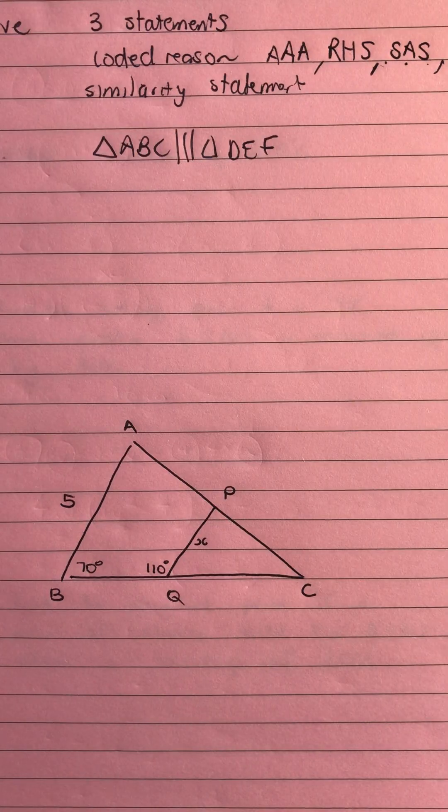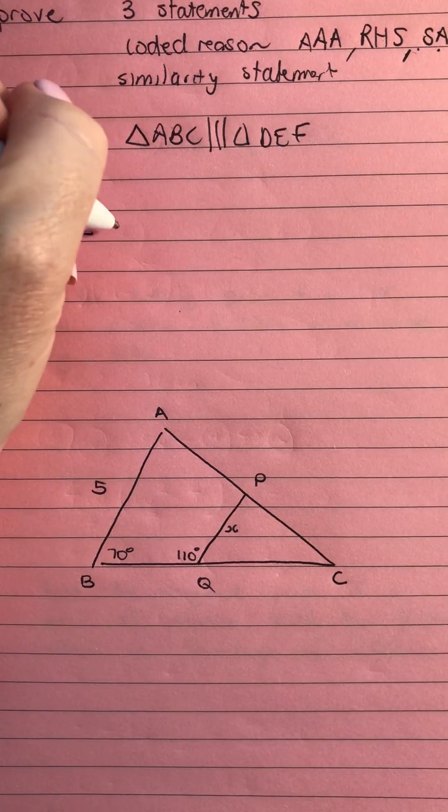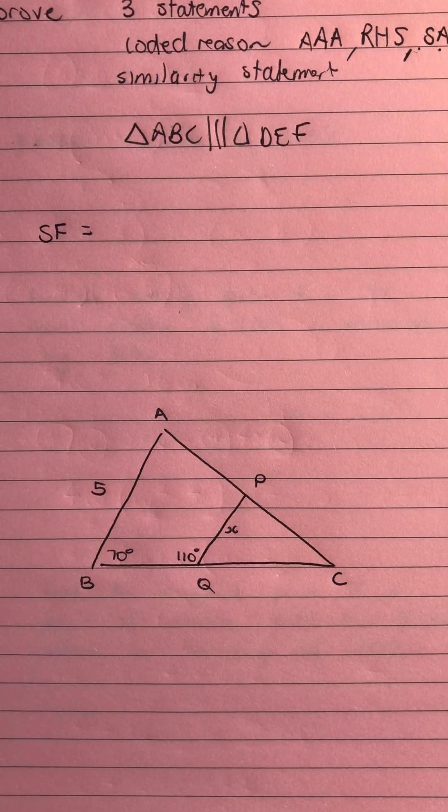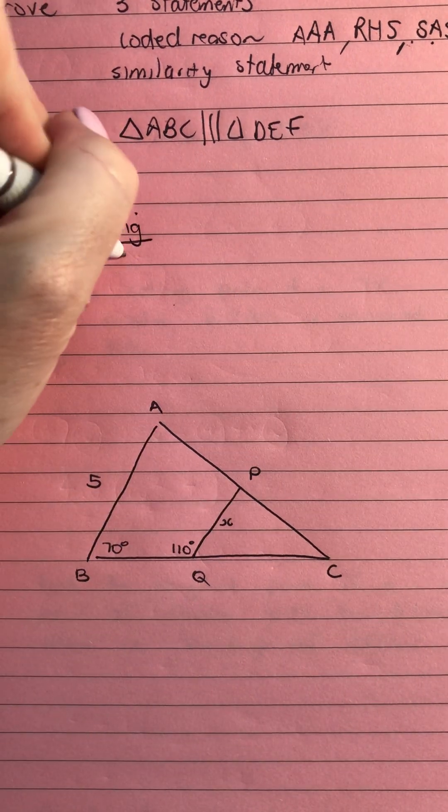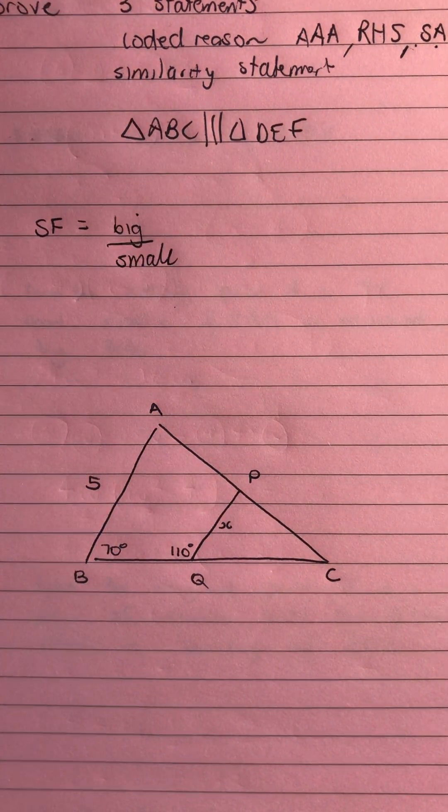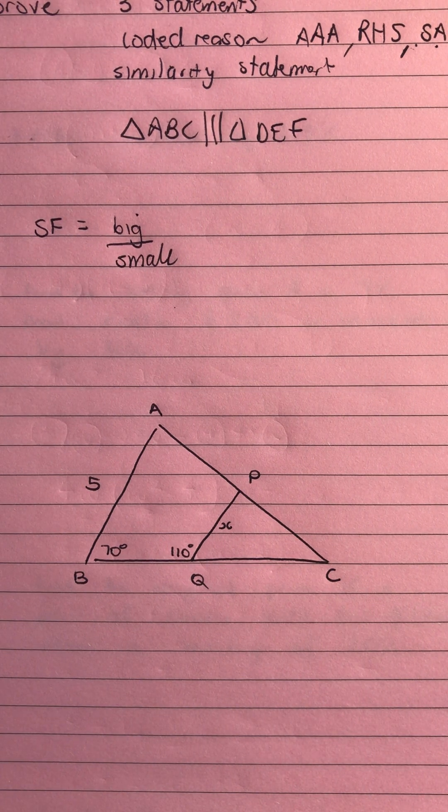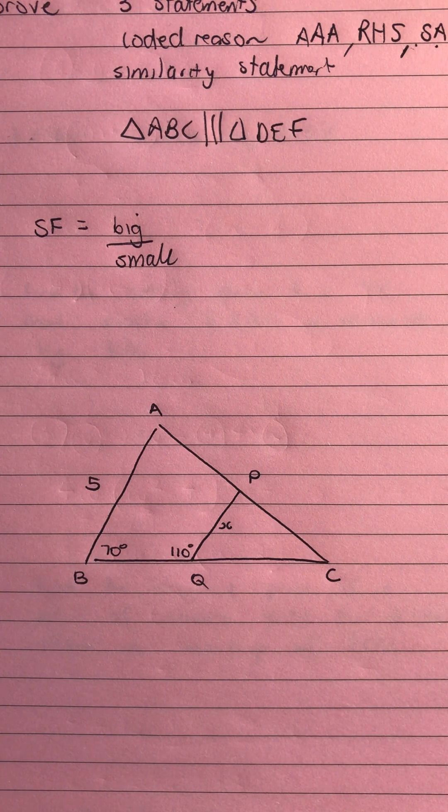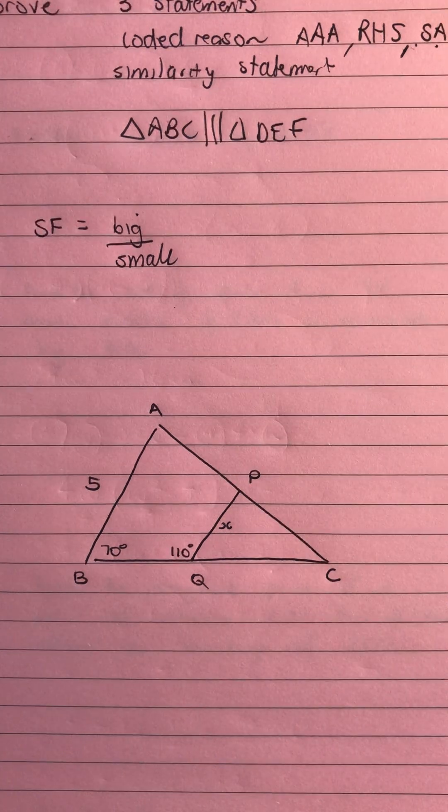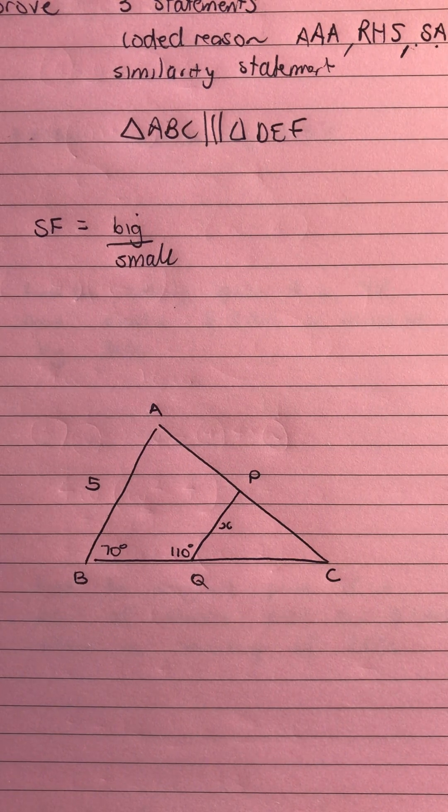We also need to be able to find a scale factor. I always like to find the pair that are in corresponding spots on the two triangles and do the big one divided by the small. Now they have to be the ones that correspond to the same position to do that and then once I've done that I know that I can work out a missing side. If I'm going small to big I'm going to multiply by the scale factor, big to small I'm going to divide by the scale factor.